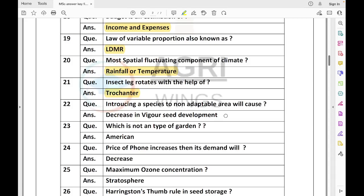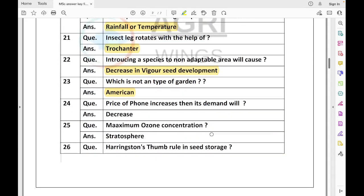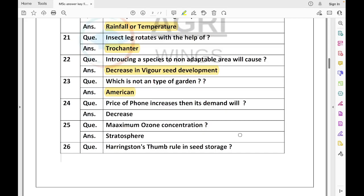Law of variable proportion is also called law of diminishing marginal utility or principle of opportunity cost. Most spatially fluctuating component of climate was asked. Insect leg rotates with the help of trochanter or coxa - both were options. Introducing a species to non-adaptable area will cause decrease in vigor and seed development. Among options were genetic drift and others, but this was a seed science question.